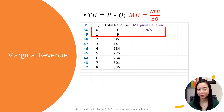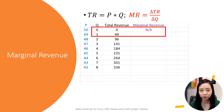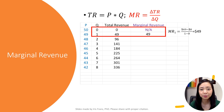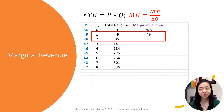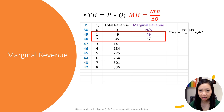With the information of total revenue, I can calculate marginal revenue. Marginal revenue is equal to the change in total revenue divided by the change in quantity. The marginal revenue of the first unit is the change in total revenue, $49 minus $0, divided by the change in quantity, 1 minus 0, which gives you $49. The marginal revenue of the second unit is $96 minus $49 divided by 2 minus 1, and that gives us $47.